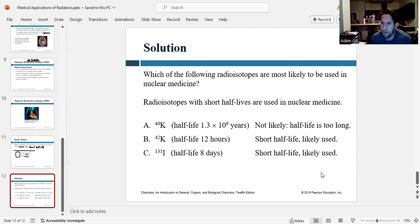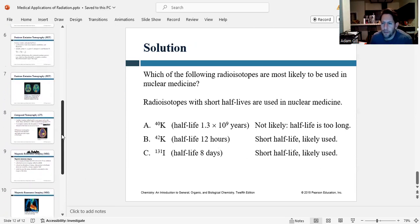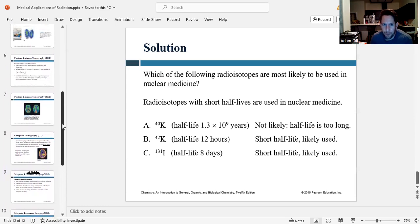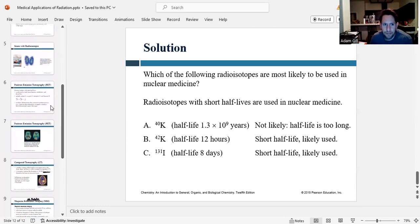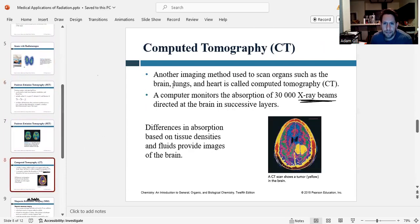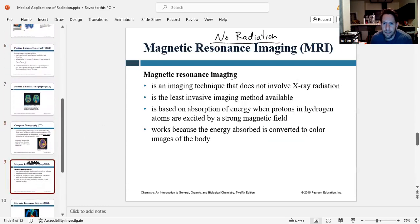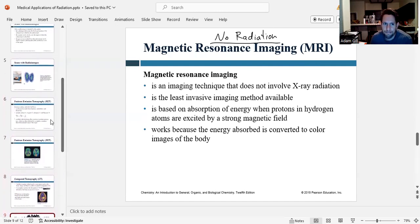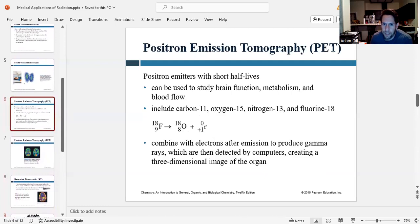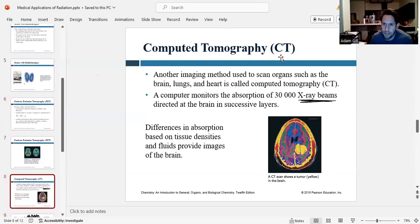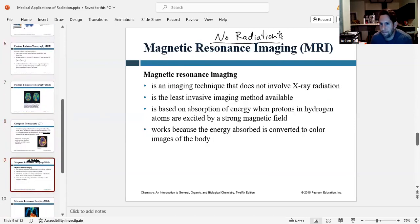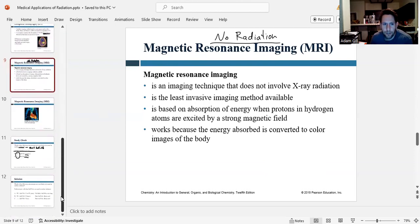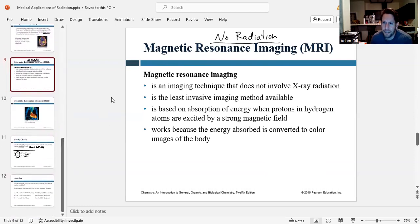So it looks like we're correct. So for this section, the things you should be familiar with are the different types of imaging: PET scans, CT scans, and MRIs, and what type of radiation they use. So PET scans use positron emitters, CT scans use x-rays, and MRIs use no radiation. And that concludes this lecture and the end of chapter 5. Thanks for watching, and I'll see you in lab this week.